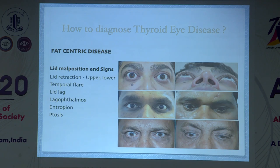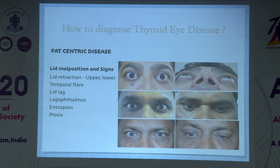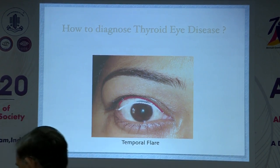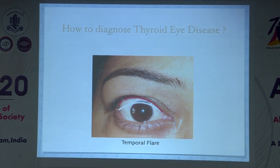There are broadly two phenotypes of thyroid disease. The first is fat-centric disease, characteristically presenting with lid malpositions: upper and lower eyelid retraction, temporal flare, and lid lag. This photograph demonstrates upper eyelid retraction and lower eyelid retraction on the left eye. In down gaze, the upper eyelid lags behind the contralateral normal eye. Temporal flare means relatively more retraction on the lateral side, because the lateral horn of the levator palpebrae superioris is a stronger structure than the delicate medial horn.